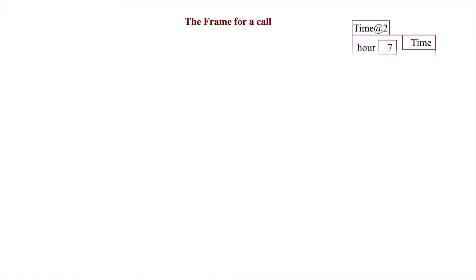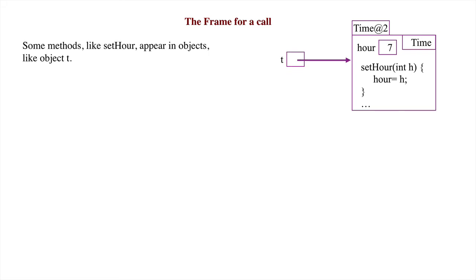Other information may be necessary. For example, some methods, like setHour, appear in objects, like object t. The call then names the object that contains the method being called.